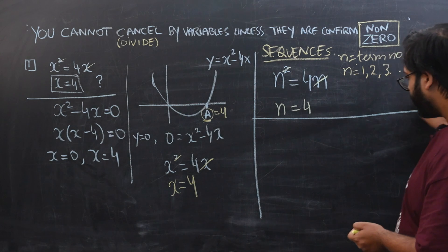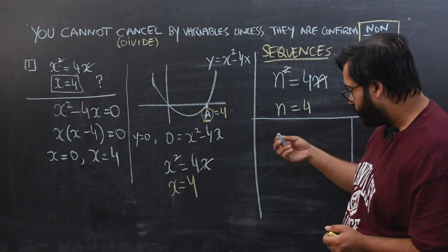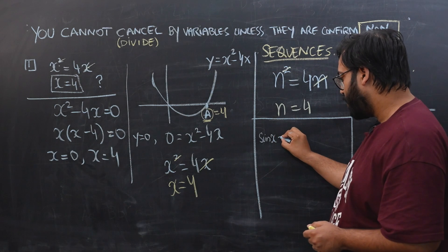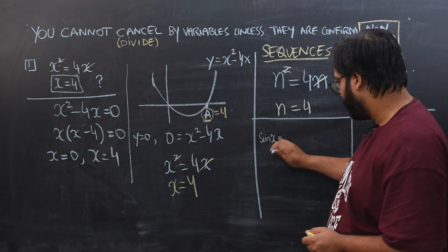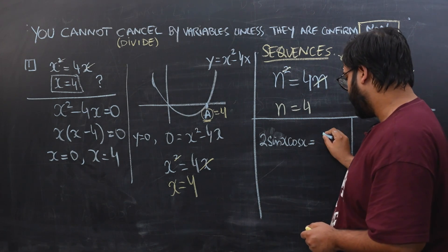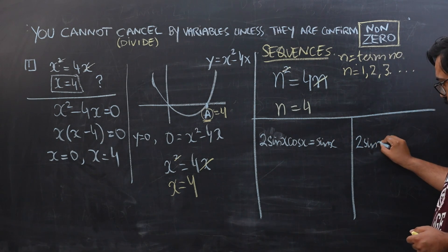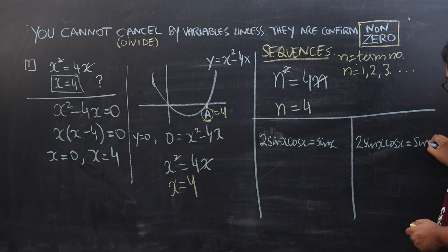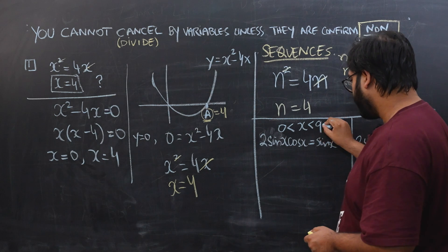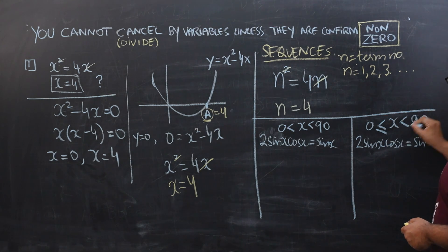By just changing the domain or context of a question, the rules change. For the next example, consider the equation 2sinx·cosx = sinx. I'll present this with two different domains: for the first case, the domain is the open interval (0°, 90°) — zero and ninety are not included; for the second case, the domain is the closed interval [0°, 90°] — zero and ninety are included.